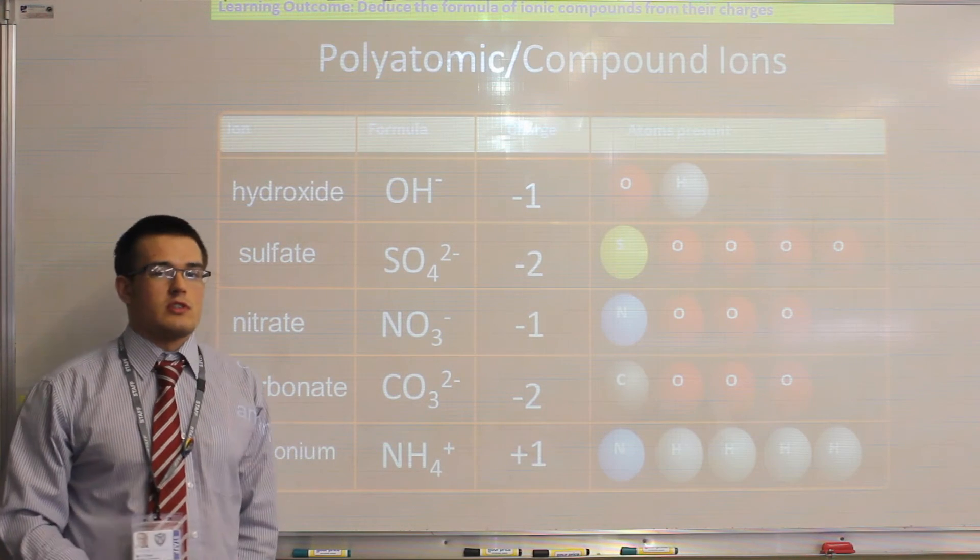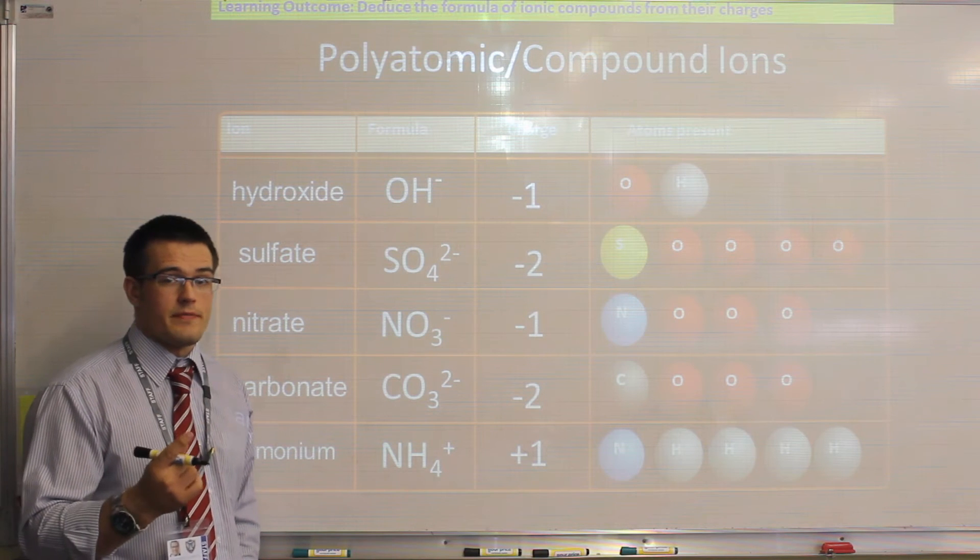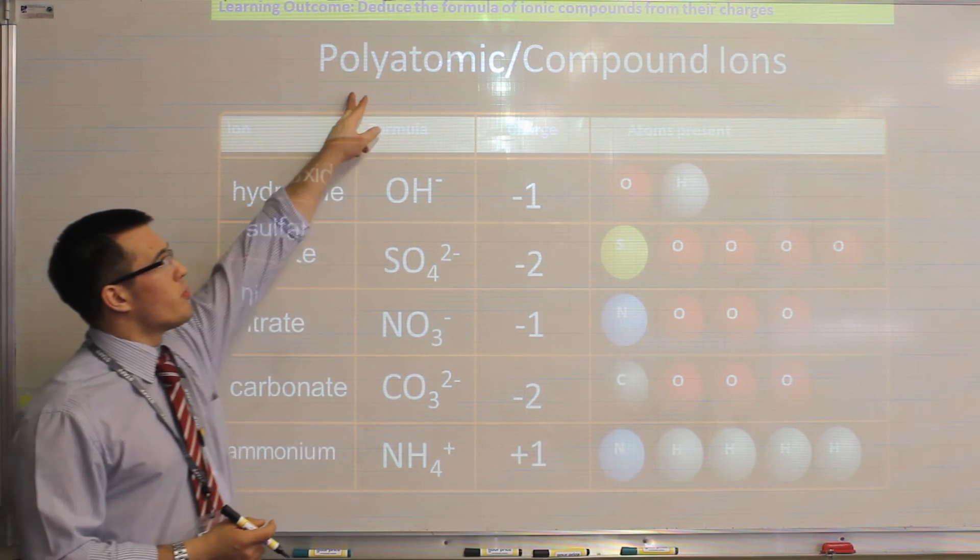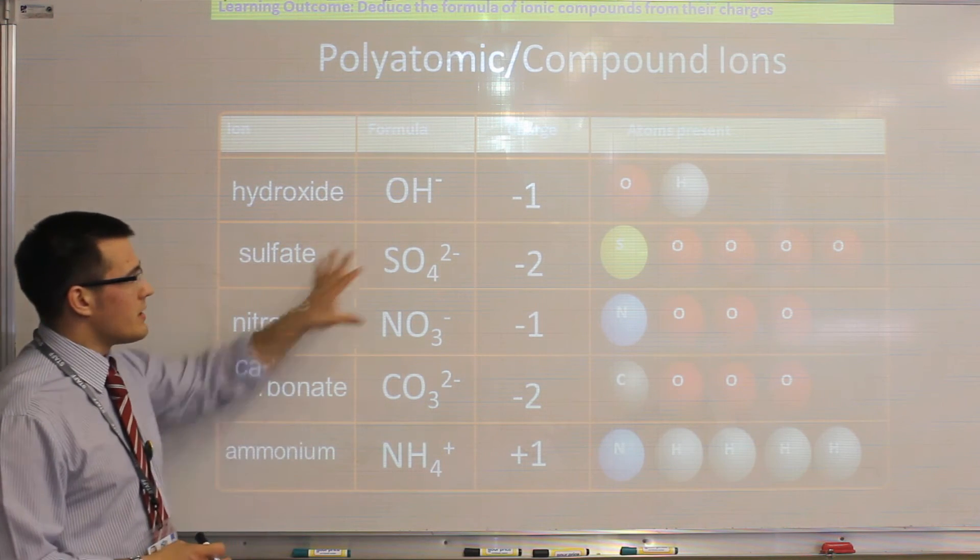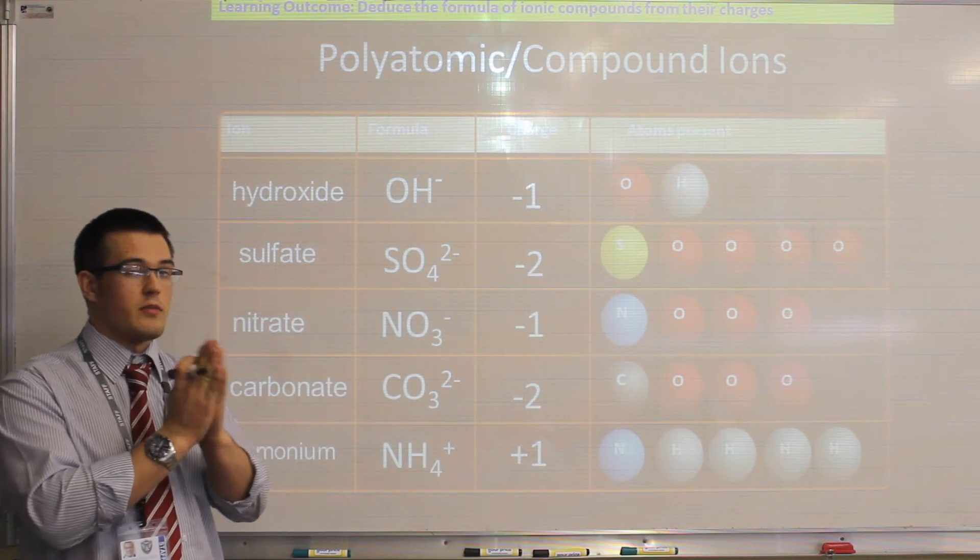All the examples we've just looked at are examples of ions that come from 1 single element. Now, we can also get ions that are what we call polyatomic, or compound ions. That means they are ions made from 2 elements that are joined by a covalent bond.